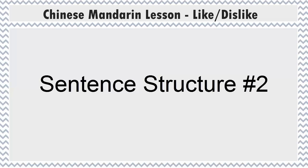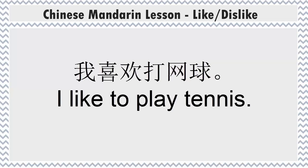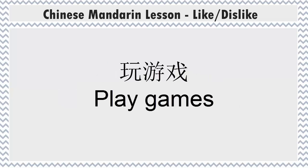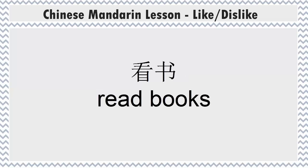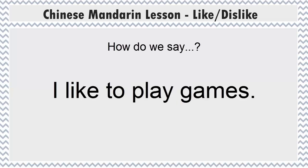The second structure we're going to learn is instead of having a noun after 'like', we are going to put in an action. For example, 'play tennis' is 打网球. So to say 'I like to play tennis', it is 我喜欢打网球. I'm going to give you three actions: 玩游戏 — play games; 看书 — read books; 睡午觉 — take a nap.